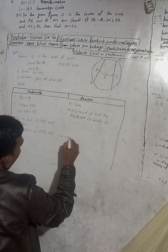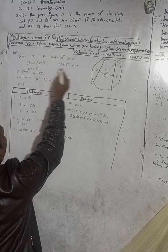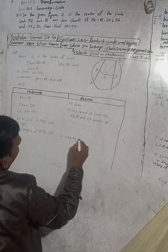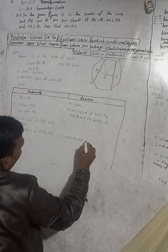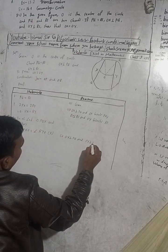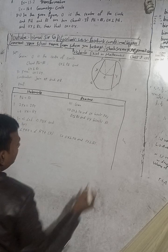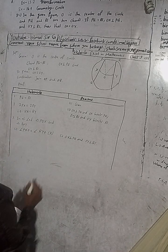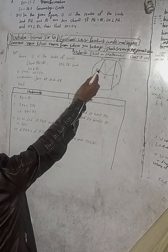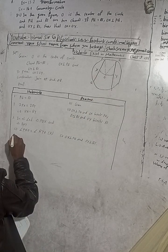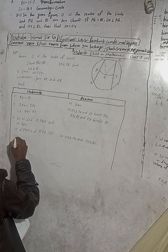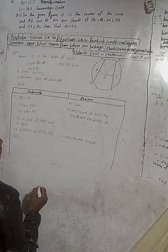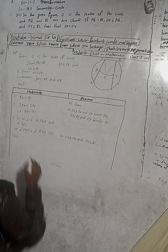OX is perpendicular to PQ and OY is perpendicular to RS. So the right angle condition is satisfied for both triangles. And PO is equal to RO — that is the hypotenuse, as both are radii of the same circle.